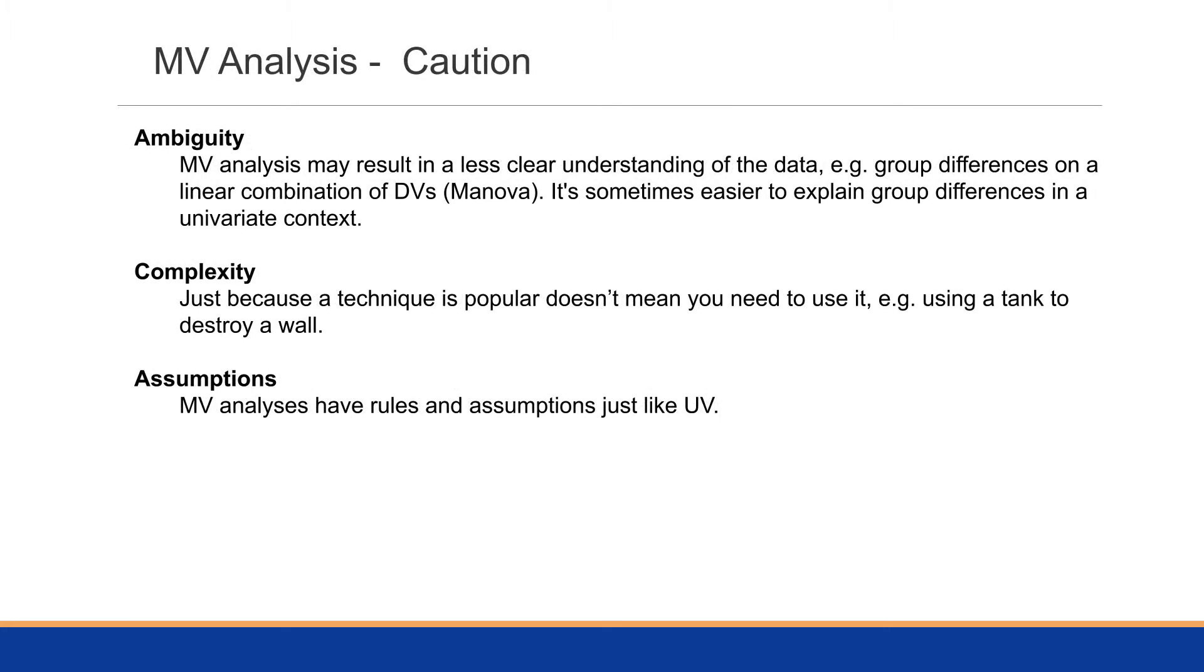One of the things we need to caution about multivariate analysis is there could be a degree of ambiguity. It may result in a less clear understanding of the data. For example, group differences on linear combinations of dependent variables, say in a MANOVA. The analysis may not be very clear because we're analyzing multiple variables simultaneously, so the interpretation becomes a little bit more difficult.